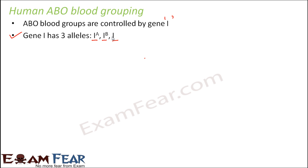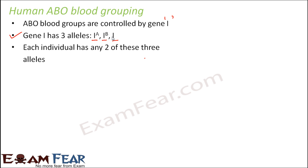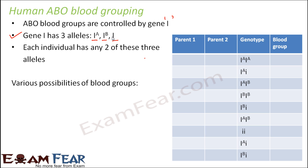What are the various genotypes possible with these alleles? Each individual will have any two of these three alleles, because a gene is made up of an allelic pair. So one person can have IA IB, or IAI, or IBI — any two out of the three alleles. There are various combinations possible with these three alleles.